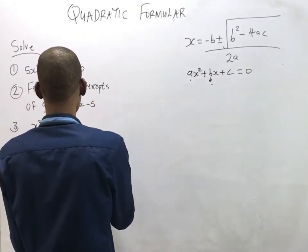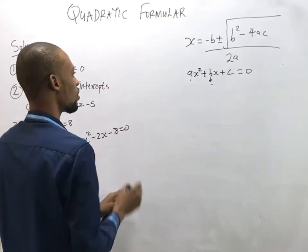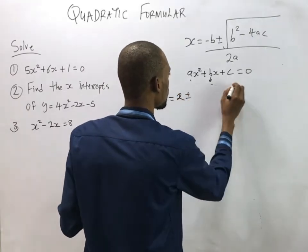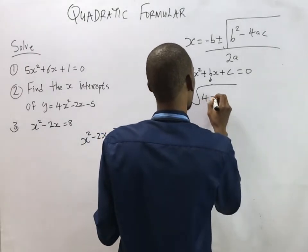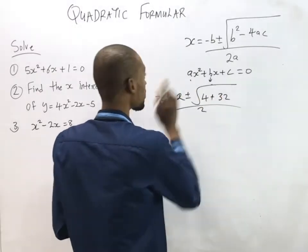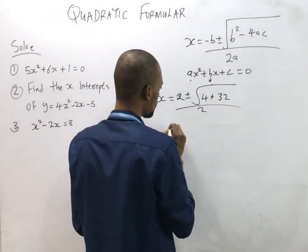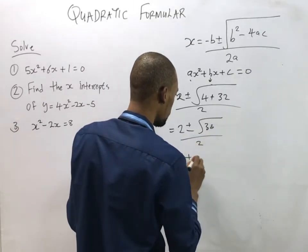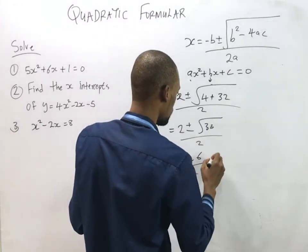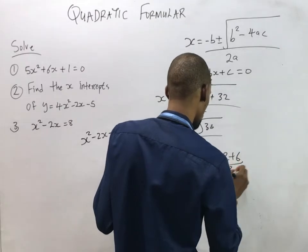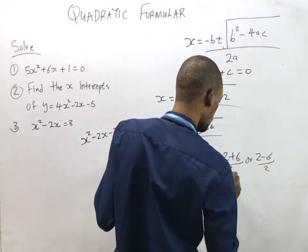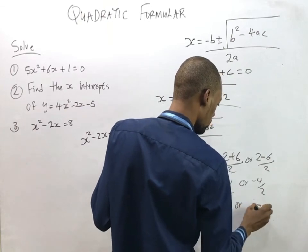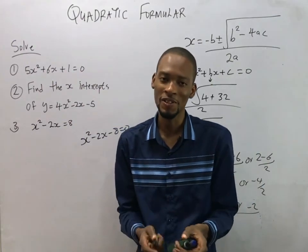Question three: rearranging gives s squared minus 2s minus 8 equals zero. Substituting into the formula, s equals minus b, which is 2, plus or minus the square root of b squared (4) minus 4ac (which is 32), giving 2 plus or minus the square root of 36, over 2. That's 2 plus or minus 6 over 2, which gives 8 over 2 or minus 4 over 2, so s equals 4 or s equals minus 2. That's how you solve quadratic equations using the formula.